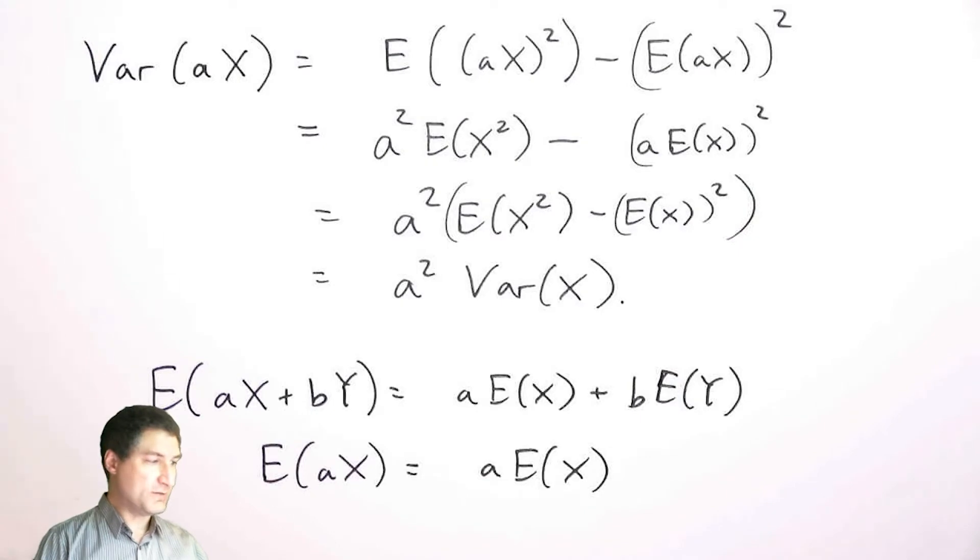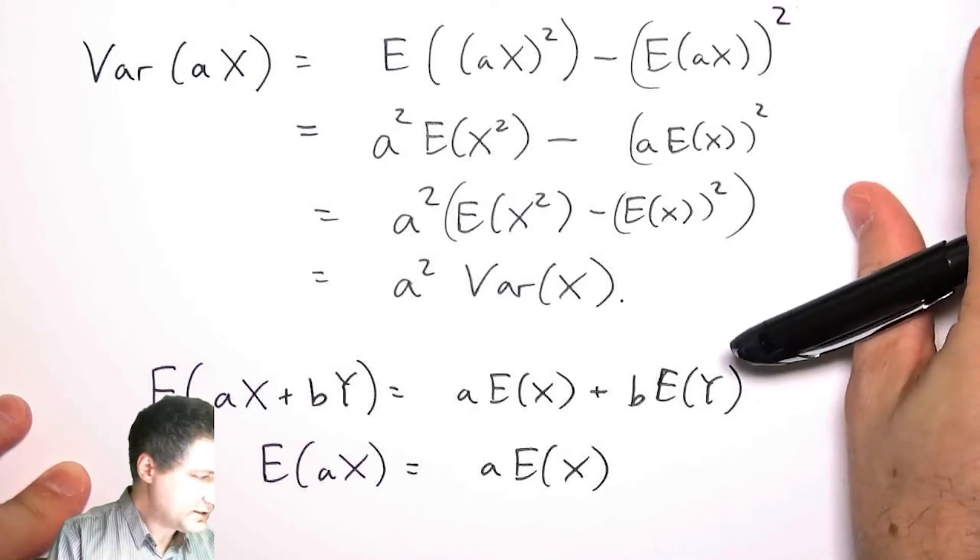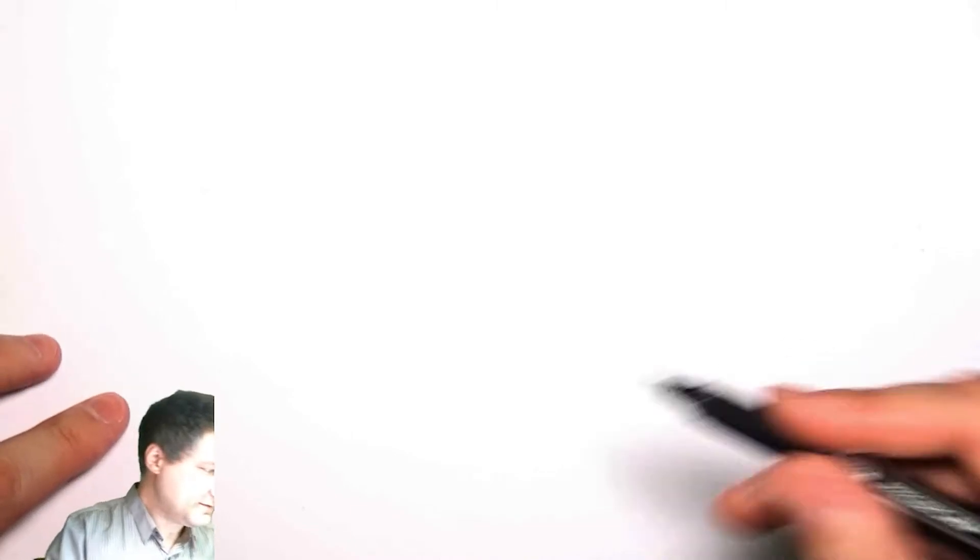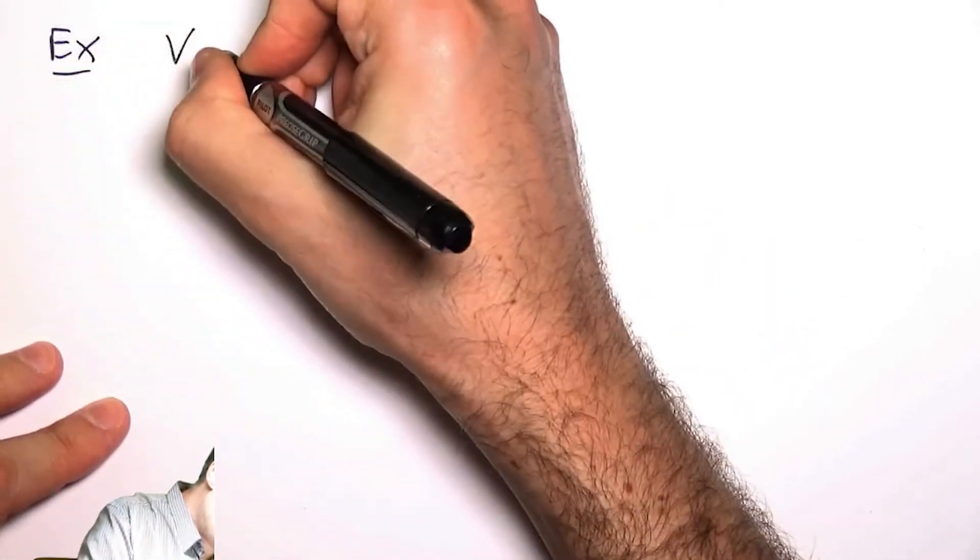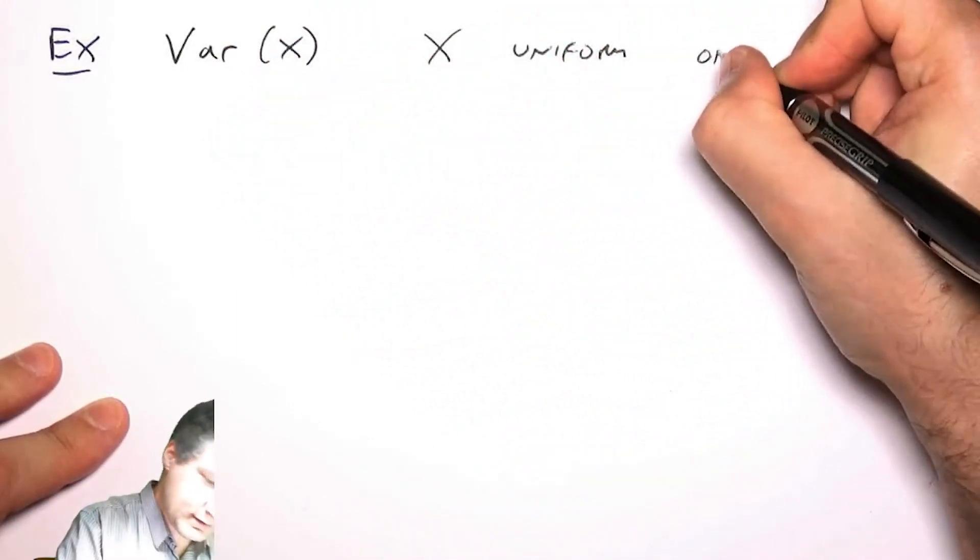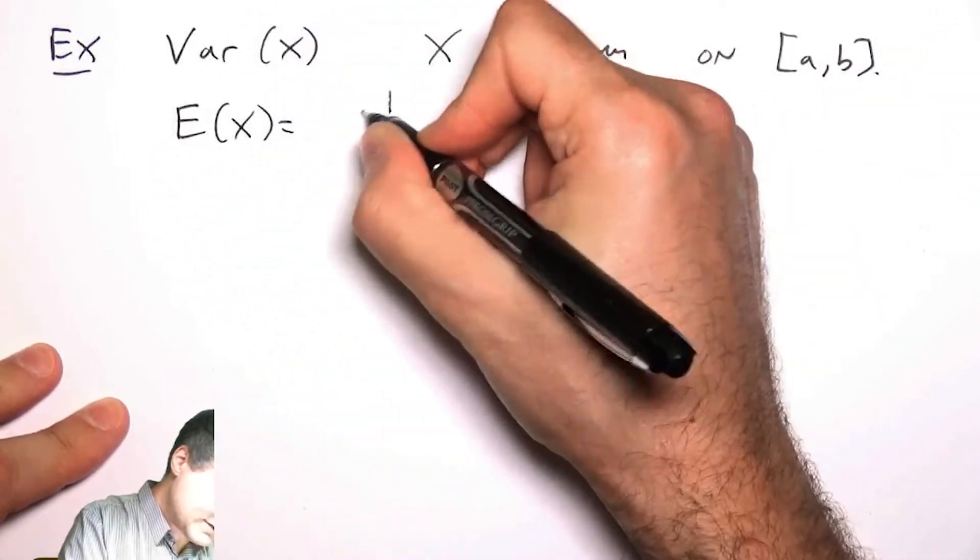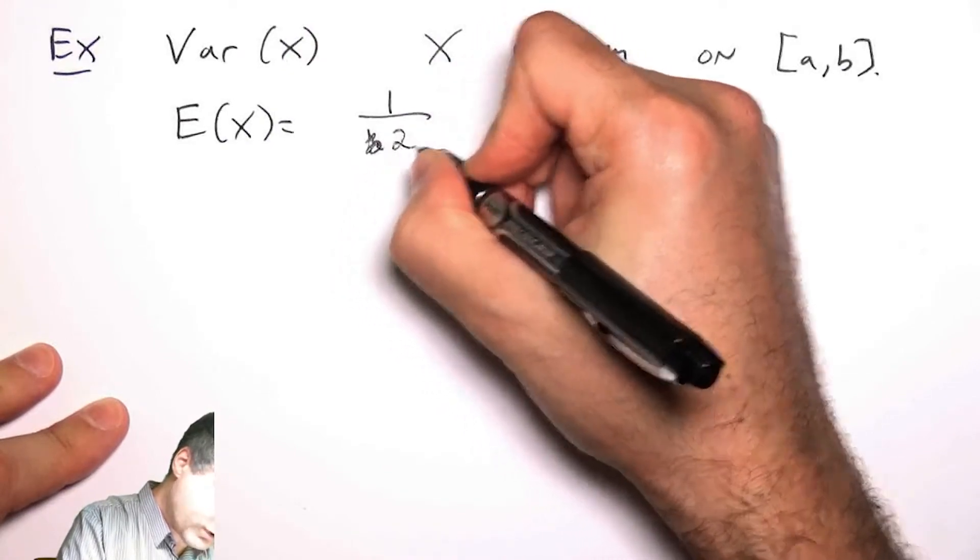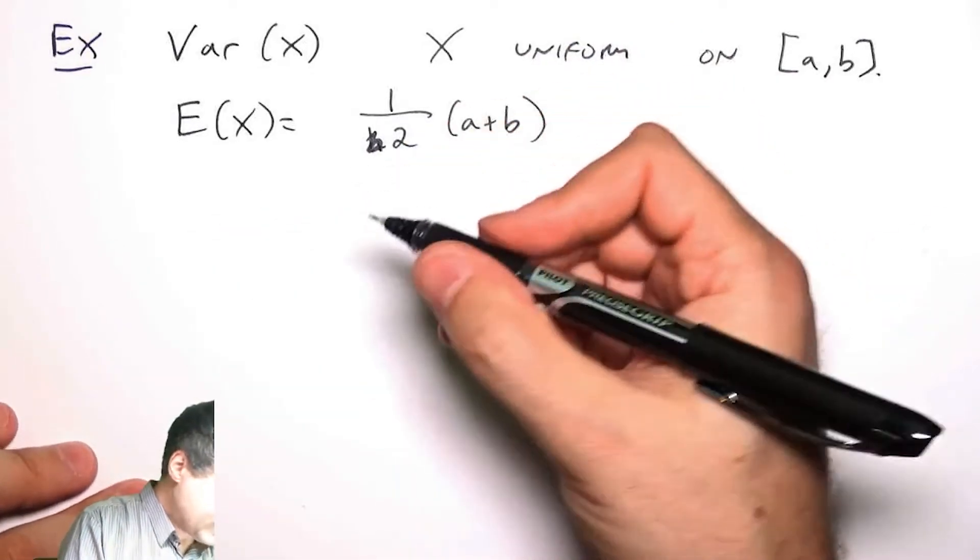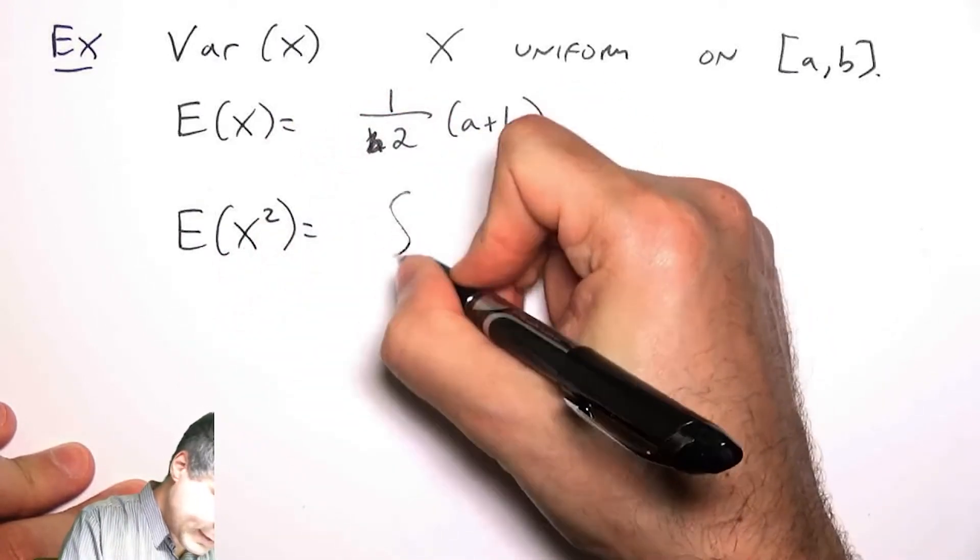Let me work a particular example. We talked about the mean of the uniform random variable—what is the variance of the uniform random variable? Here X is going to be uniform on some interval. We already found out in the previous video that the expected value was ½(a+b), which is just the average middle position.